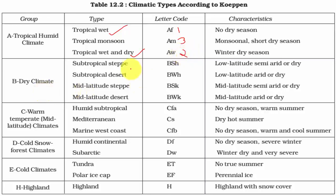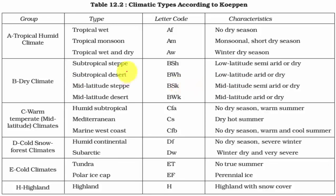Under dry climates there are two important types: semi-arid and arid. Under semi-arid we have subtropical steppi and mid-latitude steppi. Subtropical steppi closely resembles the savannah type, whereas mid-latitude steppi is a grassland region in the temperate regions with rainfall between 25 to 60 or 70 cm per annum. Desert climatic regions are also dry - subtropical deserts are called hot deserts and mid-latitude deserts are called cold deserts.